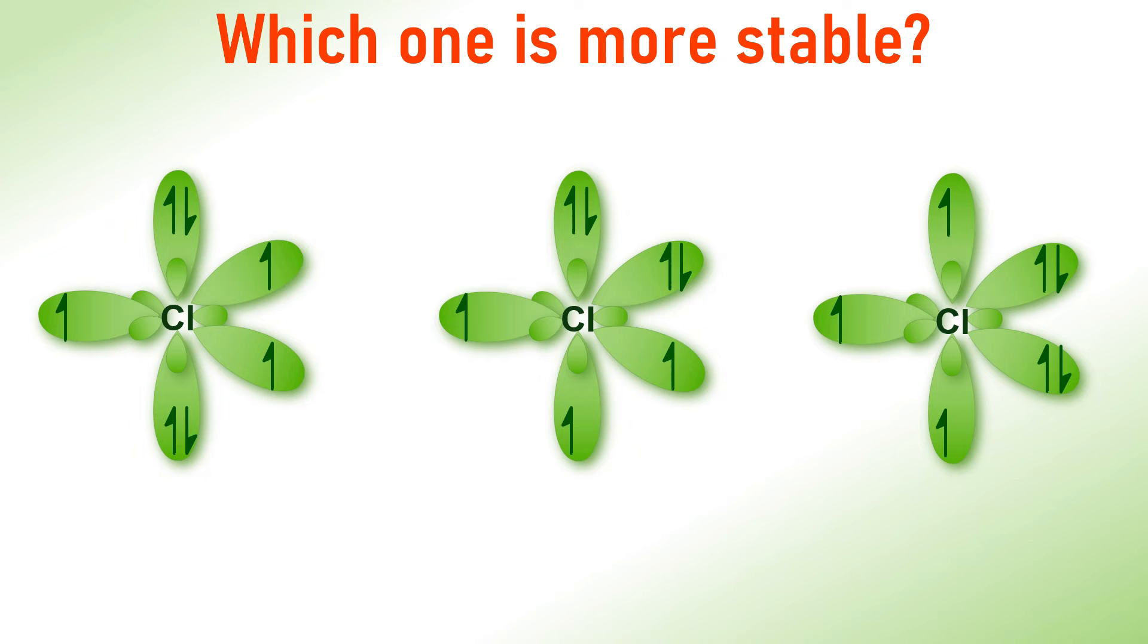Remember that in ClF3, there are no dative bonds. Whereas, the half filled hybrid orbitals will make bonds by pairing with electrons from fluorine atoms. Thus, formed electron pairs are involved in the bond formation and hence are referred to as bond pairs, denoted as BP.